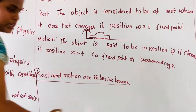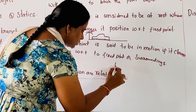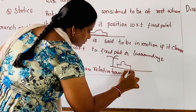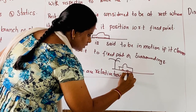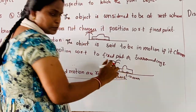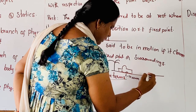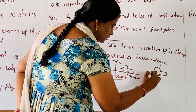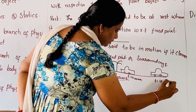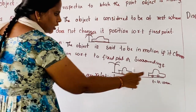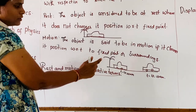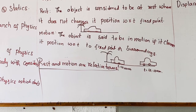Let us take an example. There is a tree on the road and there is a car. When time t equals 10 am it is at a certain position. As time passes the car moves and reaches another point at t equals 10 minutes, and the position of the car is displaced — it is changing its position with respect to the tree. So we can say that the car is in motion.